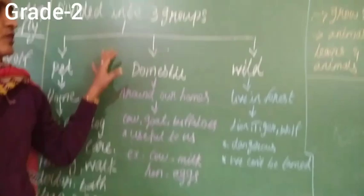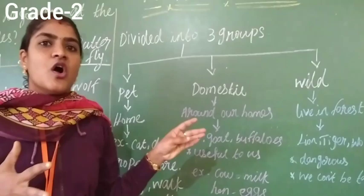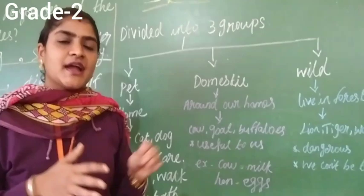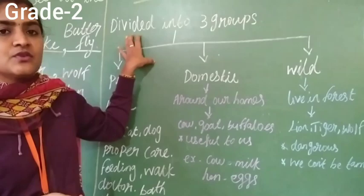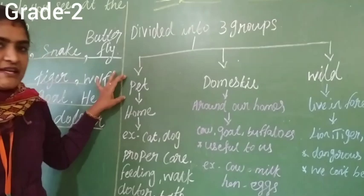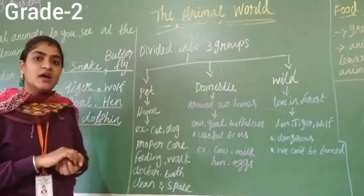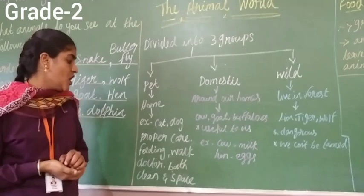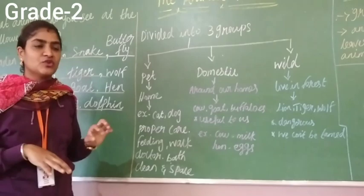Now let's do a small recap of what we have studied. All animals are not the same; they don't eat the same kind of food. Animals have different shapes, sizes, and colors. Animals have four limbs; some have arms and legs. Based on their character, animals are divided into three groups. The first is pet animals — kept at home, for example dog and cat. We must give proper care: feed them regularly, take for walks, and take to the doctor if hurt.